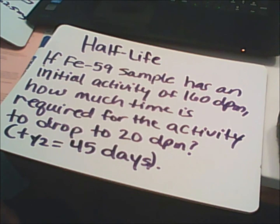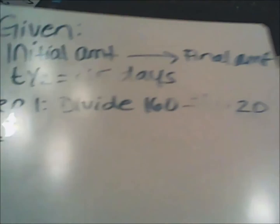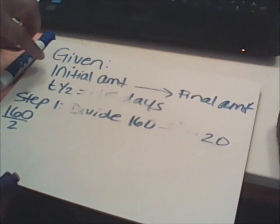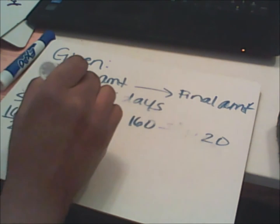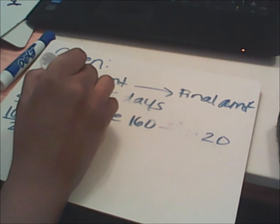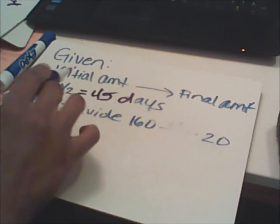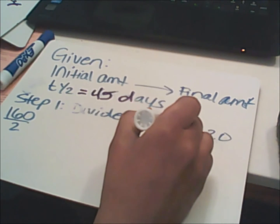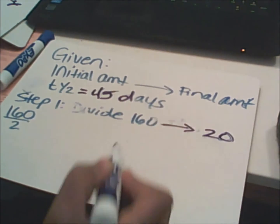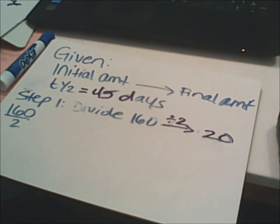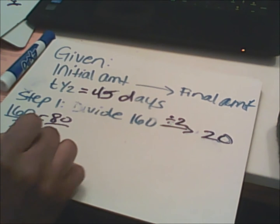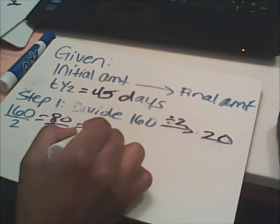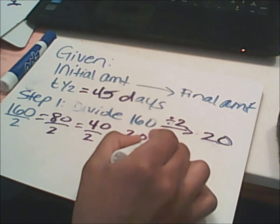For the first step, take your initial amount and divide it by two until you get to the final value. You have your initial amount of 160 DPMs and your final amount of 20 DPMs. Take 160, divide by 2 to get 80, divide by 2 to get 40, divide by 2 to get 20 DPMs.